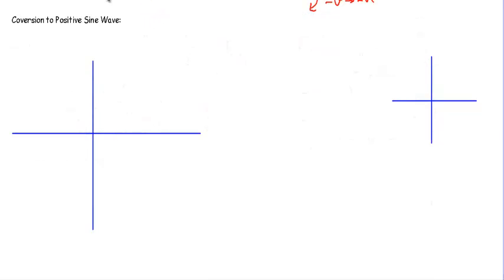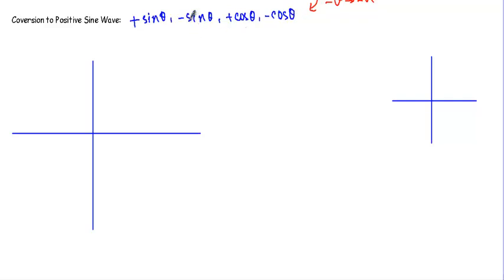When showing phase difference and phasors, we will encounter alternating quantities in the form of either plus sine theta, minus sine theta, plus cosine theta, or minus cosine theta. Whatever the form of the trigonometric function, we have to convert these into positive sine theta. You need to know the procedure for how we convert any alternating waveform into plus sine theta using the four-quadrant coordinate system.